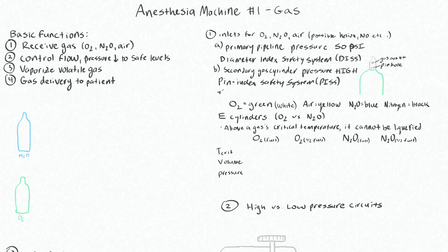For the gas cylinders, there is also a color coding system. Here in the US and Canada and UK — with the main difference being that in the US your oxygen lines are green, whereas they are white in Canada. Our E-cylinders are also still green.